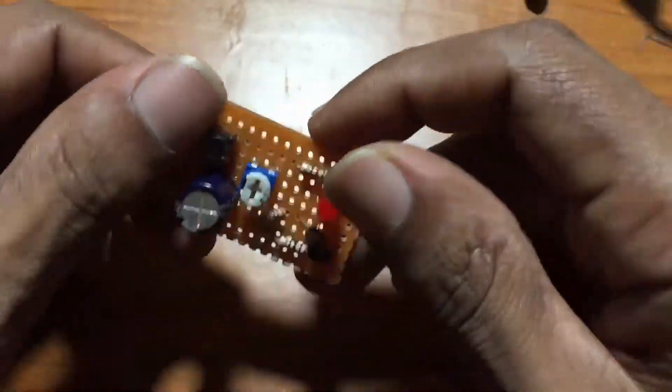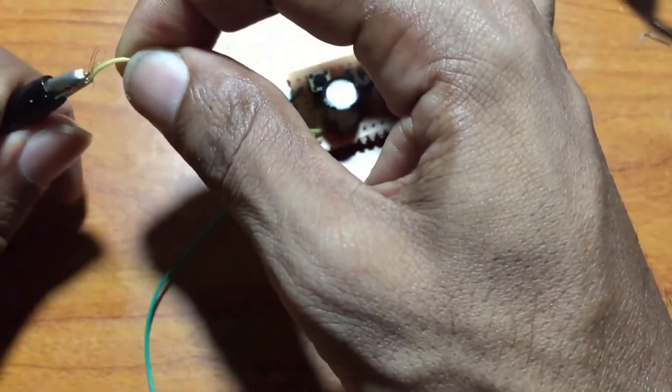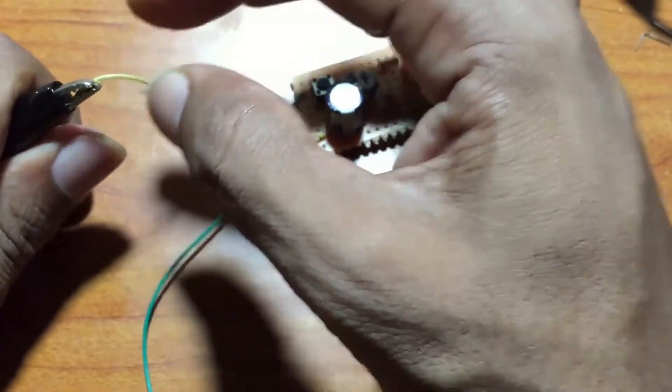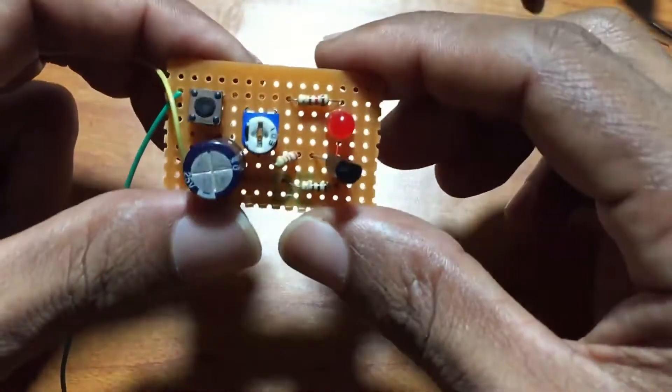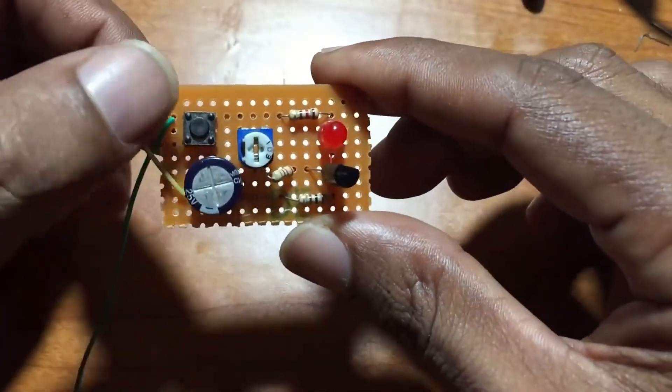If you want to control an external device, you can connect a relay instead of the LED bulb. If you discharge the capacitor, you can stop the timer before the time ends.